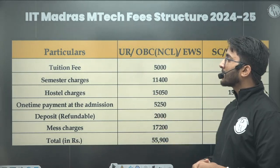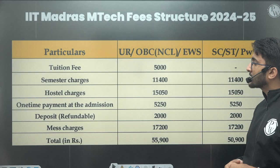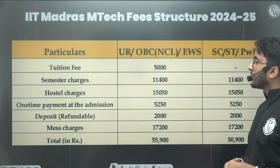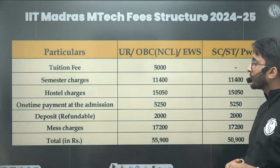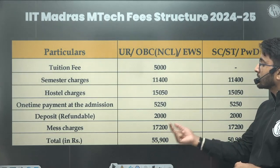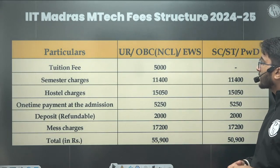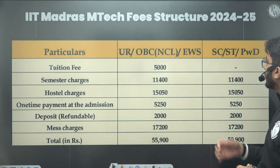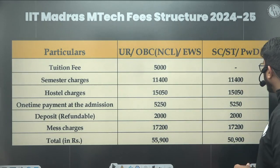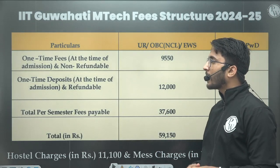For IIT Madras, the tuition fees is ₹5,000, semester charges are ₹11,400, hostel charges are around ₹15,000, and other charges are also available. So the total fees is ₹55,900 for General, OBC-NCL, and EWS, and ₹50,900 for SC, ST, and PWD.